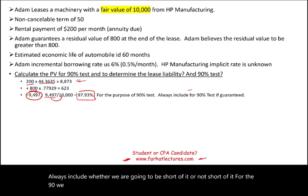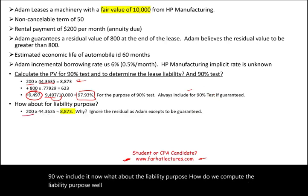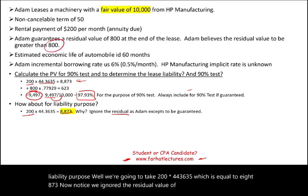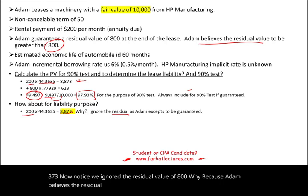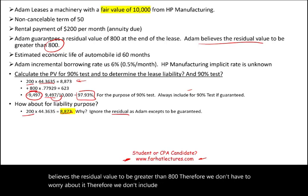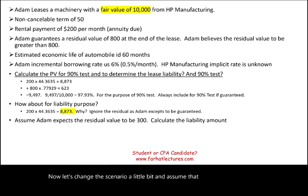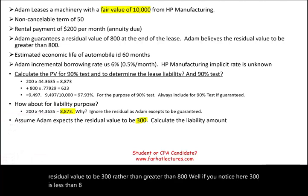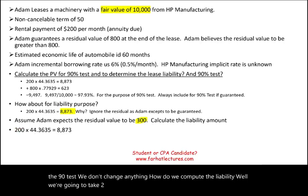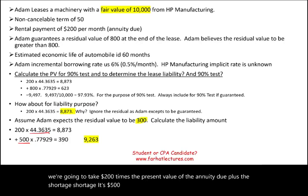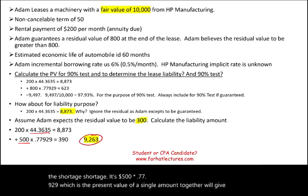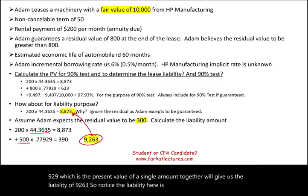For the lease liability, since Adam believes the residual value will be greater than eight hundred dollars, we ignore the residual value and compute the liability as two hundred dollars times the annuity due factor of 44.3635, giving a lease liability of 8,873. Now let's change the scenario: assume Adam expects the residual value to be only three hundred dollars rather than greater than eight hundred. Since three hundred is less than the guaranteed eight hundred, there is a shortage of five hundred dollars. The liability becomes two hundred times the annuity due factor plus the discounted shortage of five hundred times 0.77929, giving a total liability of 9,263.